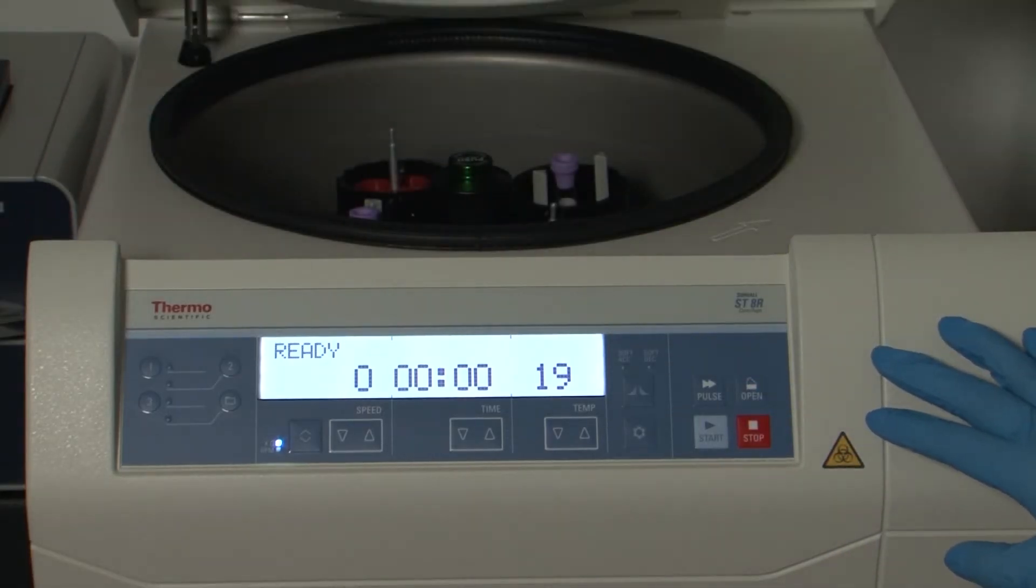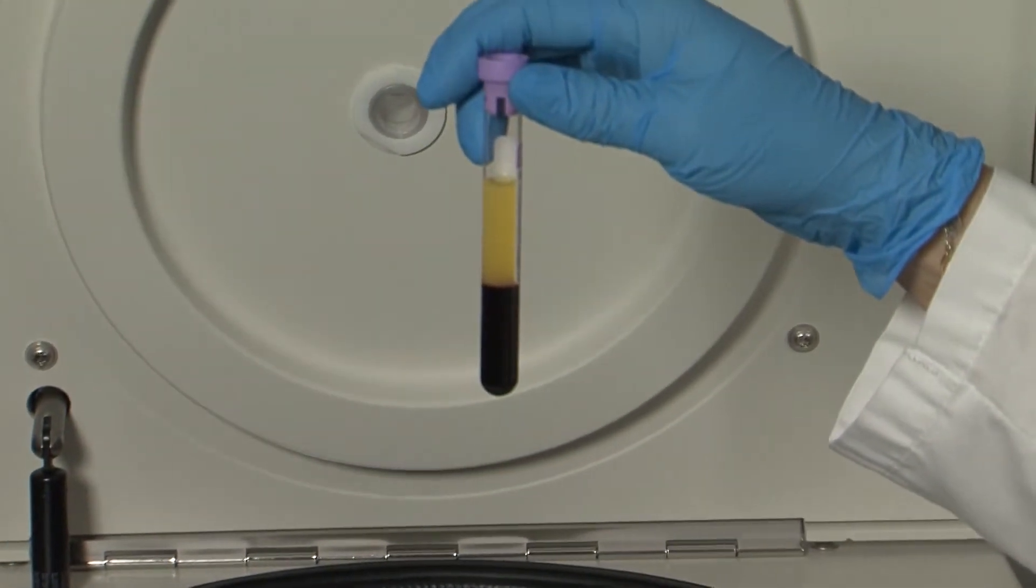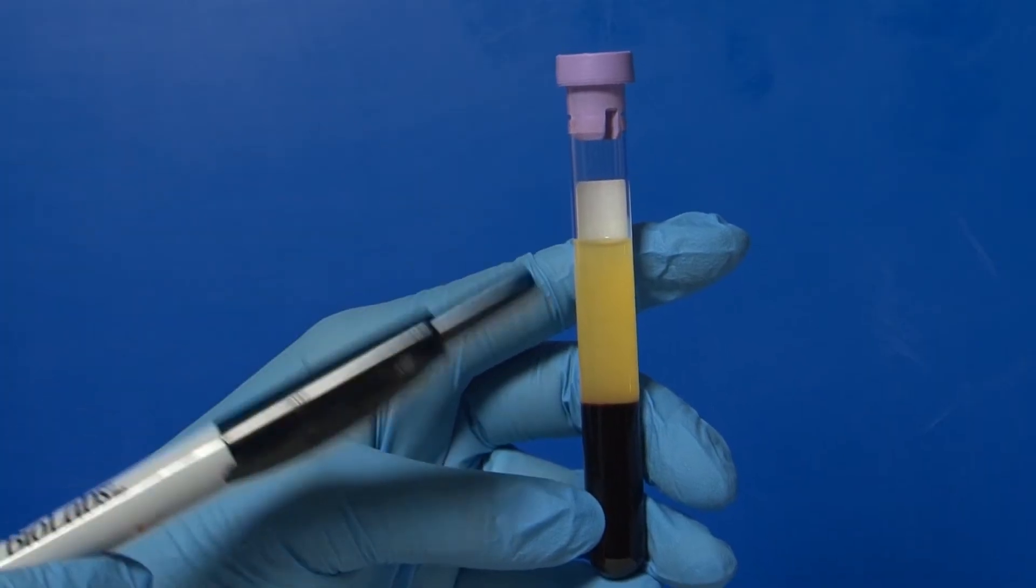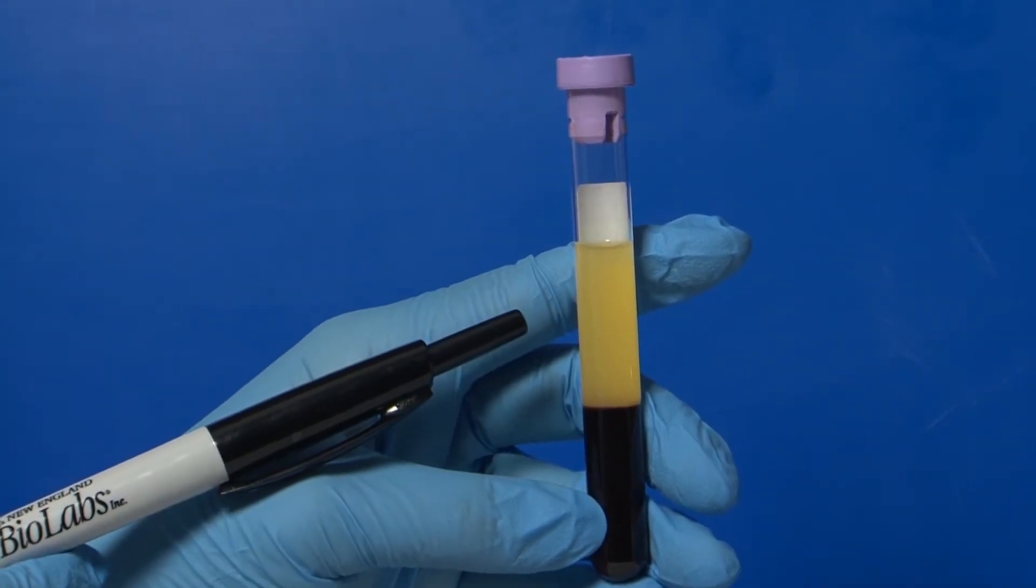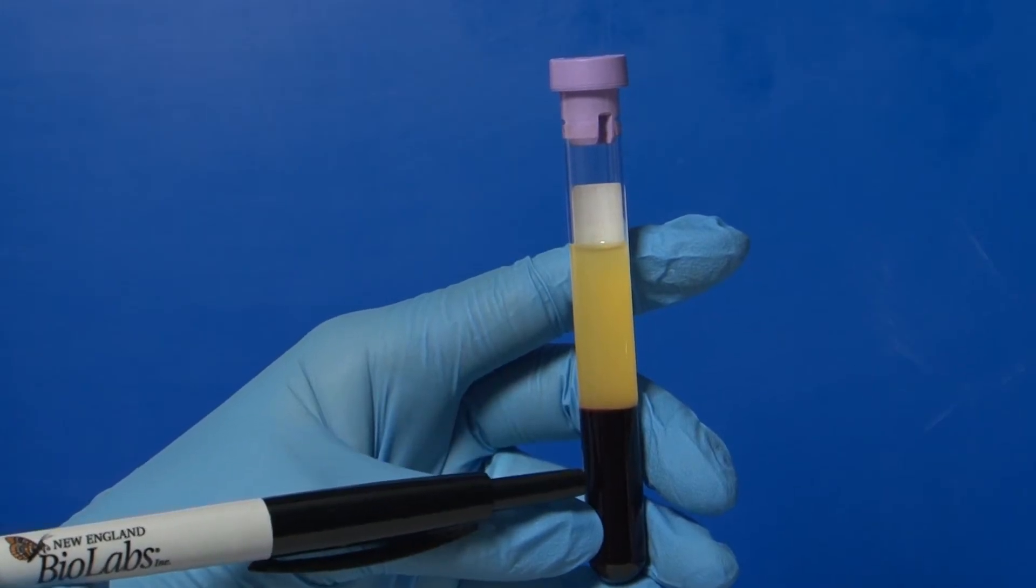Carefully remove the lavender top tubes so that the solutions do not mix. Three layers of blood components will be visible: plasma, which is the yellow fluid on the top, the buffy coat or white blood cells, and the red blood cells.